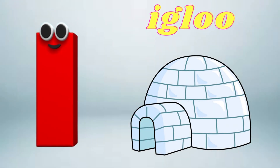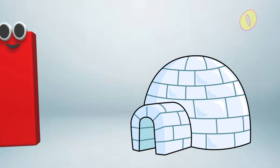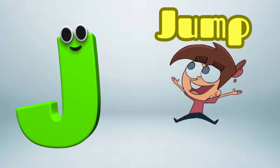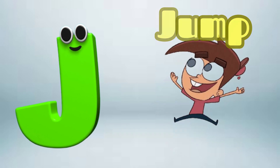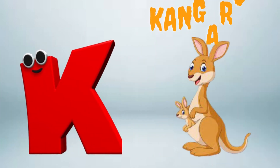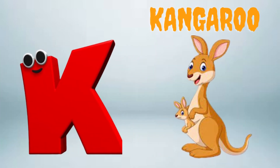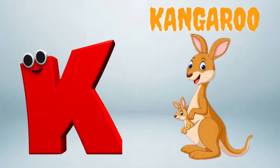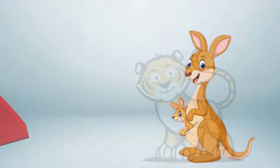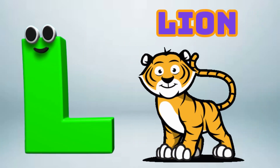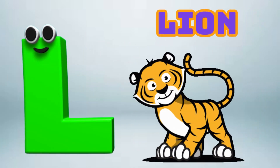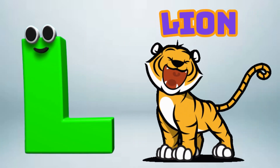I is for Igloo, I-I-Igloo. J is for Jump, J-J-Jump. K is for Kangaroo, K-K-Kangaroo. L is for Lion, L-L-Lion.